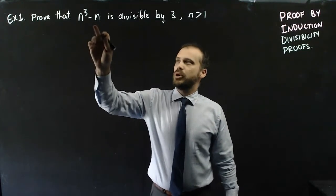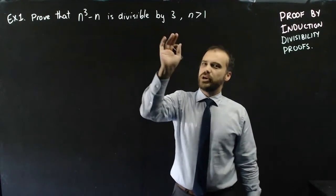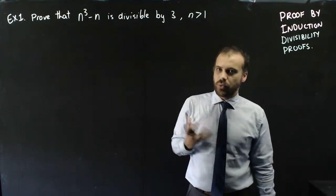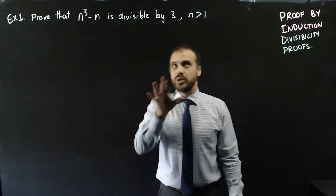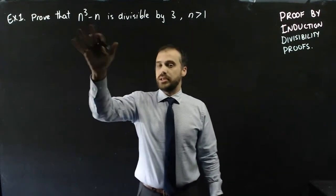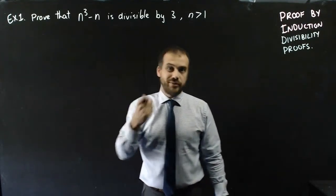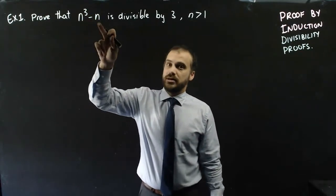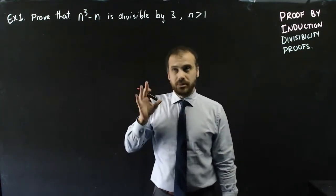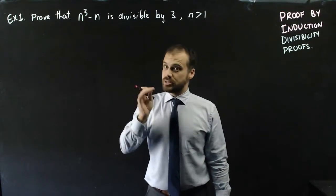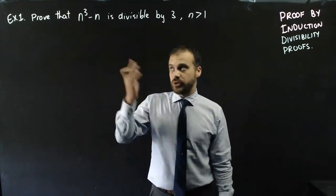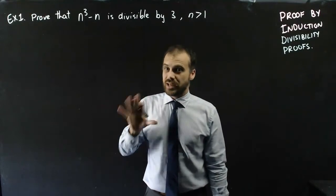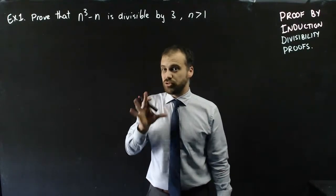Prove that n cubed minus n is divisible by 3 for all n greater than 1. Whatever value of n I put in — 5, 7, 23 — 23 cubed minus 23, I don't know what that number is, but according to this it's going to be divisible by 3. I could put a million in there and also get something divisible by 3. That's what we're trying to prove.